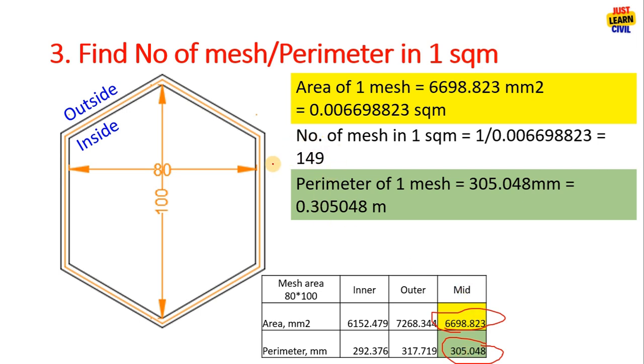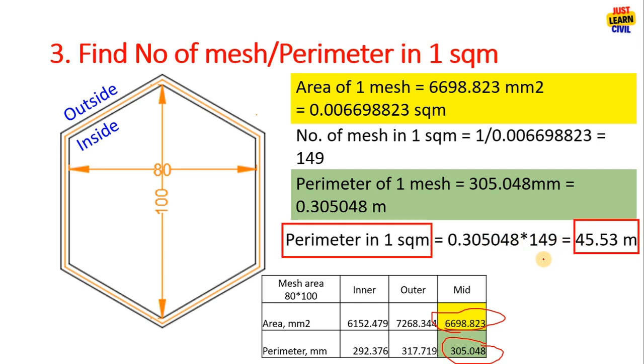For 149 meshes we will have 0.305048 into 149, so you get 45.53 meters as the perimeter in one square meter. In one square meter we have 149 mesh and for 149 mesh we get 45.53 meter length of GI wire. Now we have the length of GI wire.